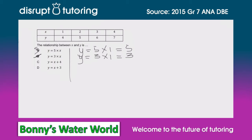Now let's move on to c. We've got y equals 1 plus 4, which equals 5. Again, we know that can't be the right answer because we need a y that equals 4.